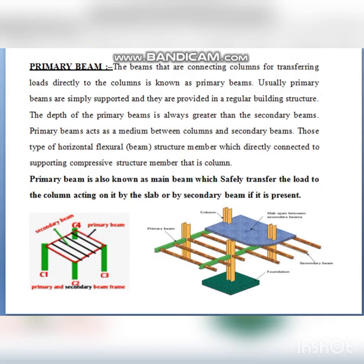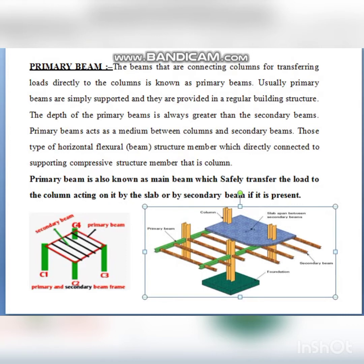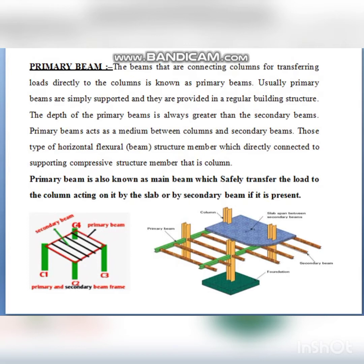The secondary beam is the beam lying on both sides on the primary beams only. In the second image, the primary beam is the one connecting the columns. The secondary beam is located between the slab and the primary beam. Depending on structural construction requirements the beams will vary. The beam which connects column to column directly is known as the primary beam.